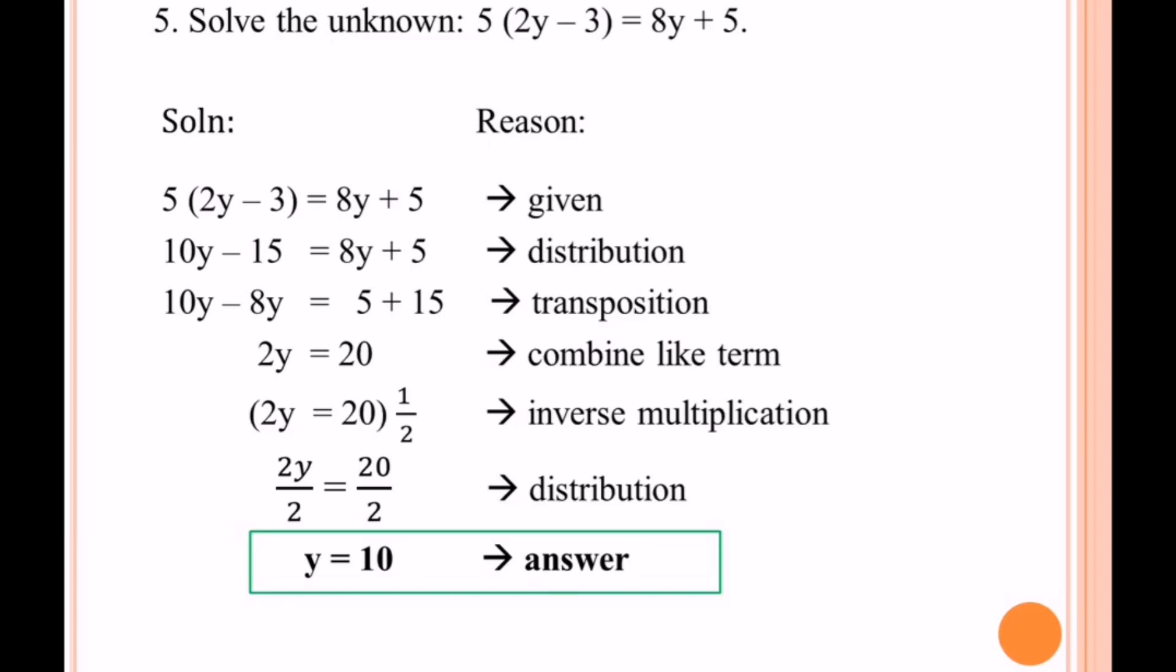If we're going to find whether our answer is right or wrong, let us do the checking. Let's substitute 10 to all the y's in the original equation. 2 times 10 is 20 minus 3 is 17, then 17 times 5 is 85.